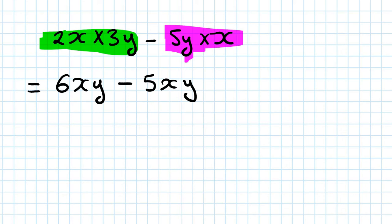Remember 2 times 3 is the same as 3 times 2. Now simplifying, since they are like terms: 6xy minus 5xy. 6 minus 5 is 1, so you're left with 1xy, but we just write xy.